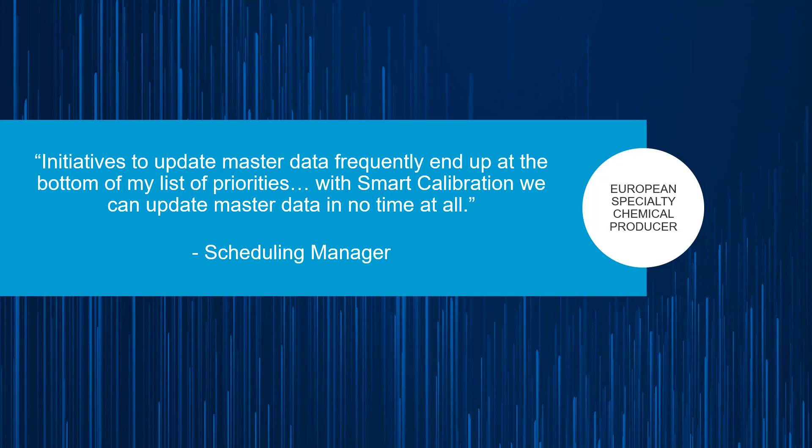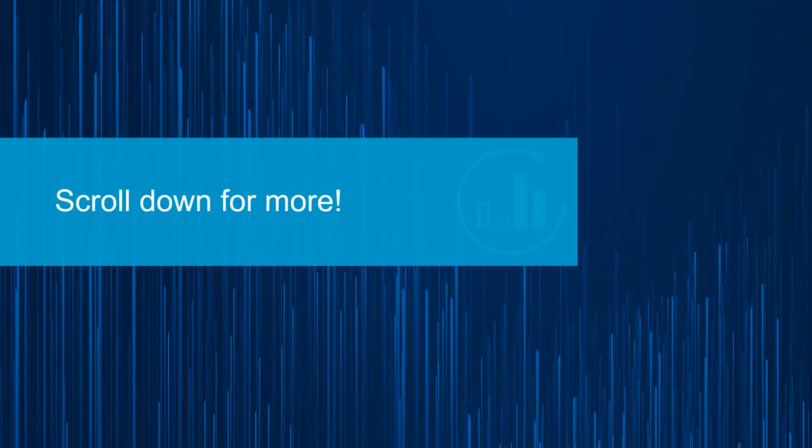Follow the links below to learn how removing uncertainties through smart calibration of your manufacturing data can close the gap between plan and actual, boosting productivity and improving performance.